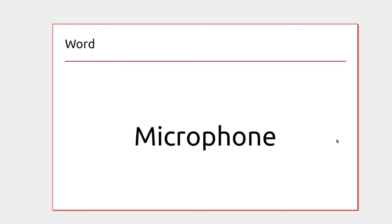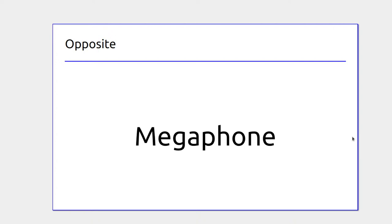These relate to sound. A microphone is something that has sound go into it, and a megaphone is something that has sound go out of it.